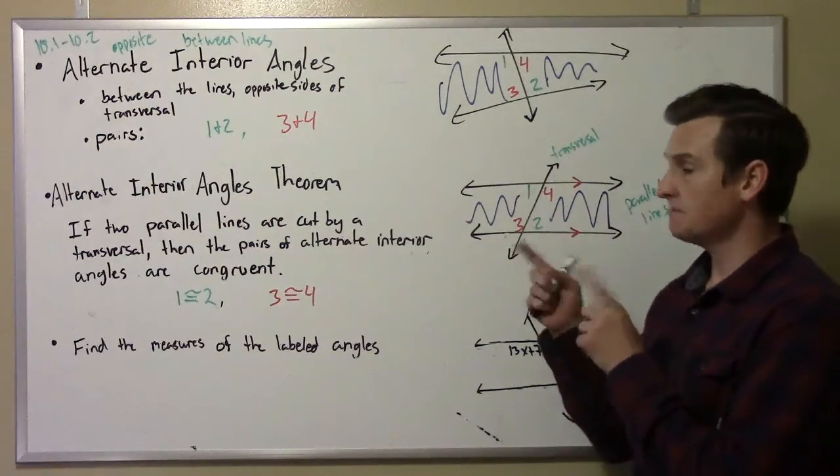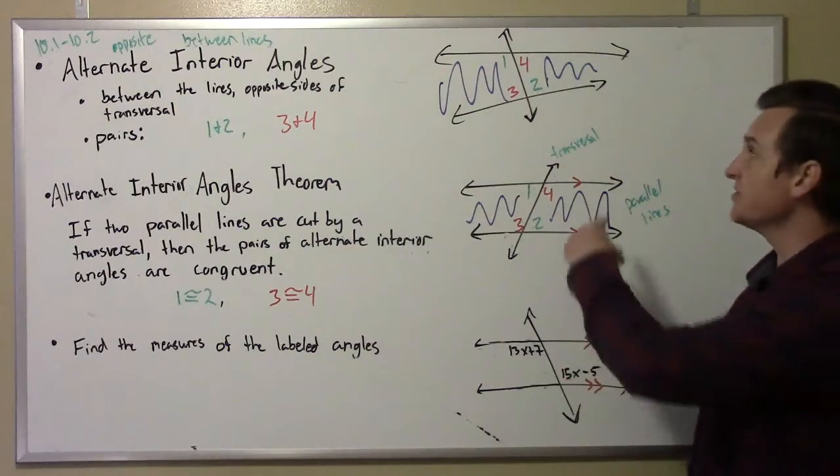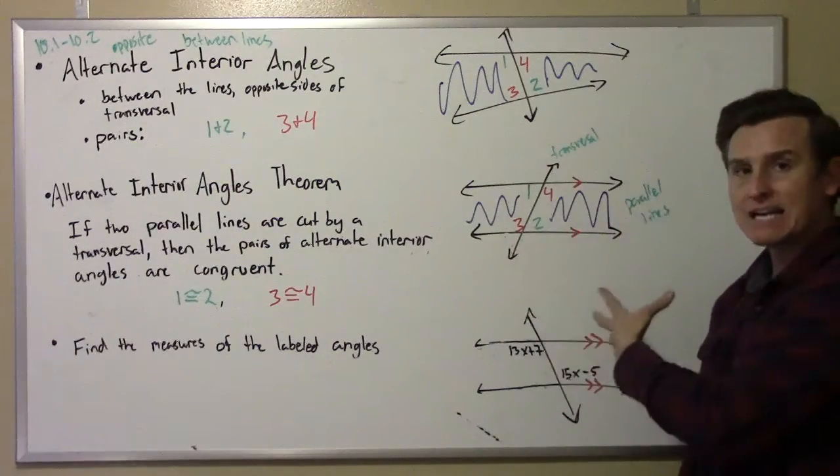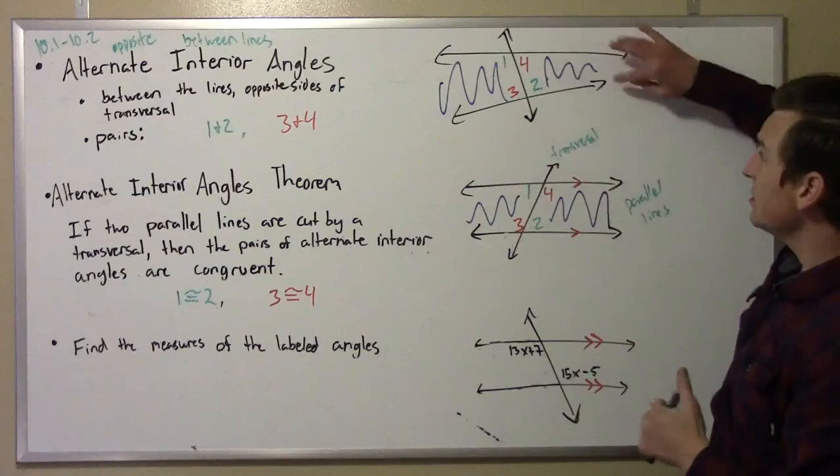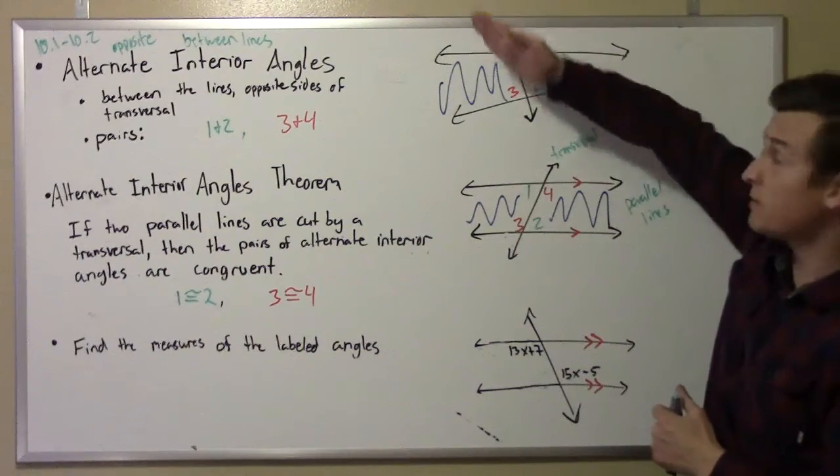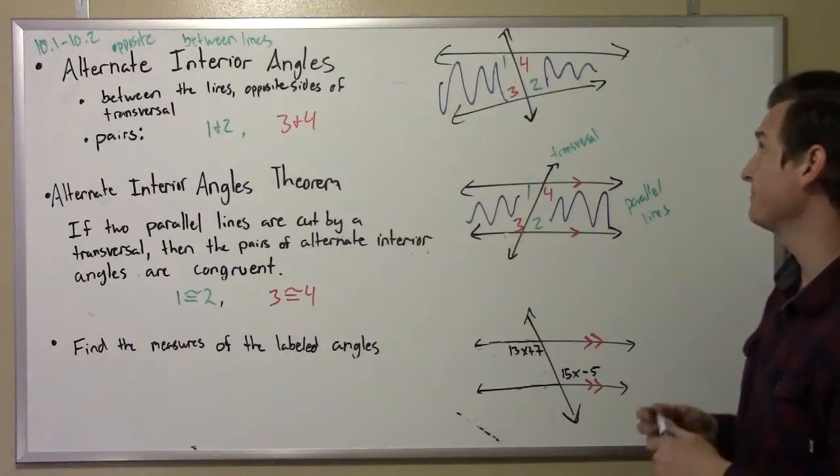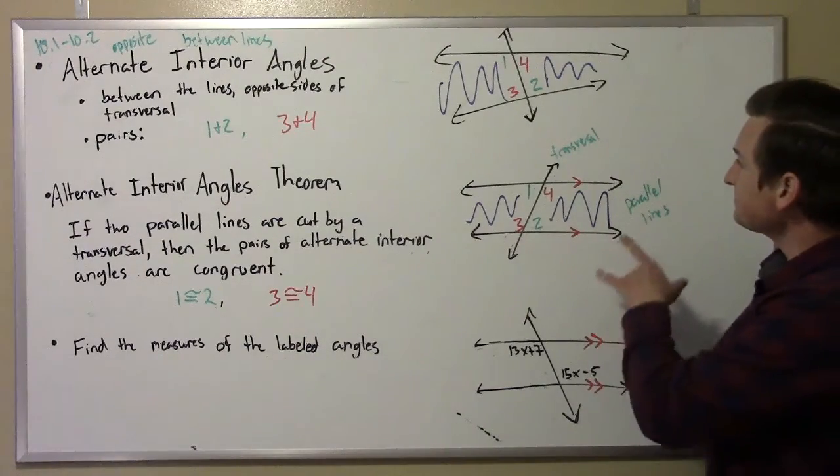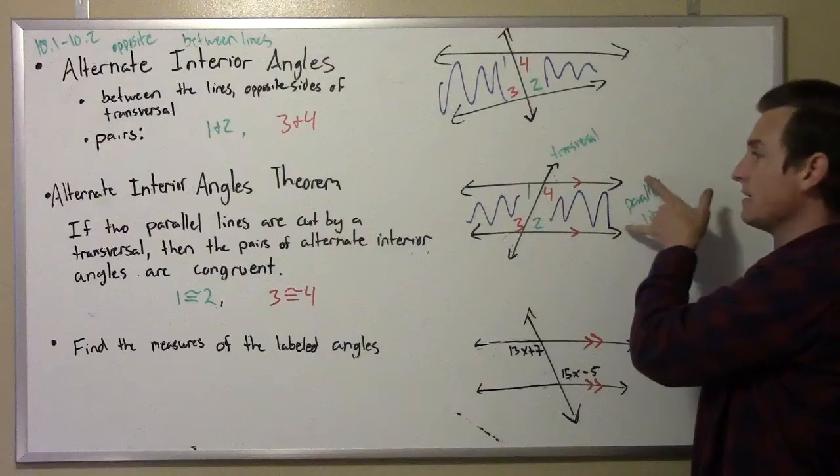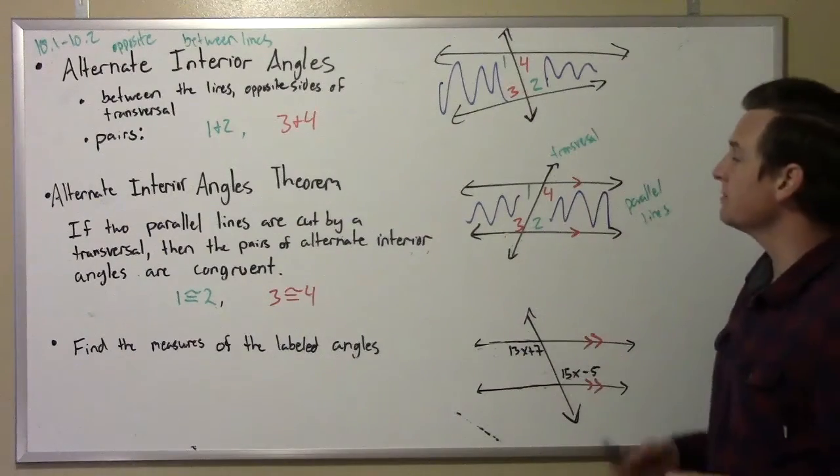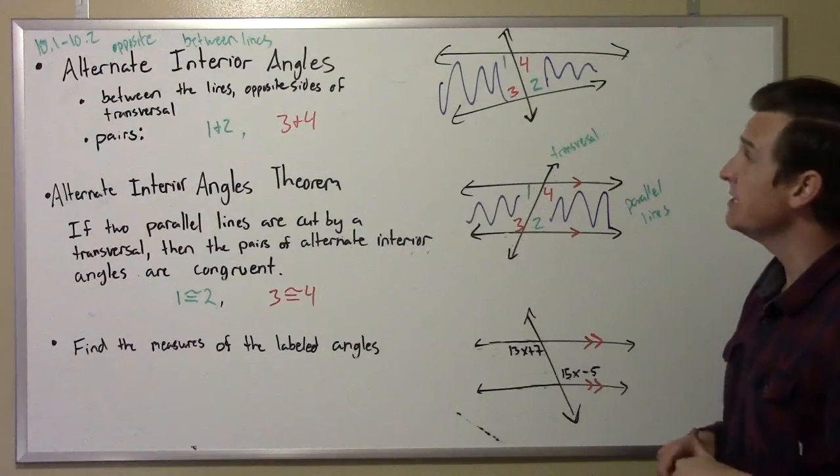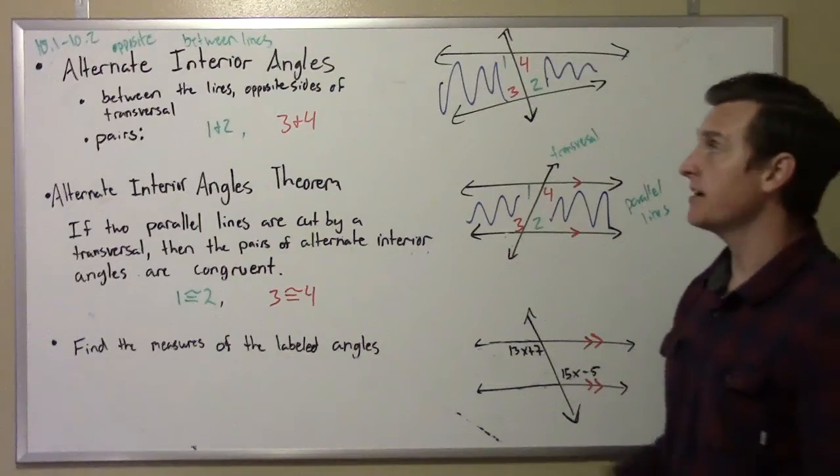Alternate interior angles are an angle relationship that you get when you have two lines that are cut with what we call a transversal. The transversal goes across both of them. Here they're not parallel, and here they are parallel, so they're similar, but this has an extra bonus feature.